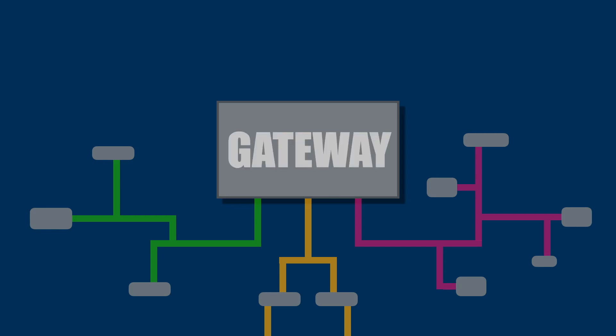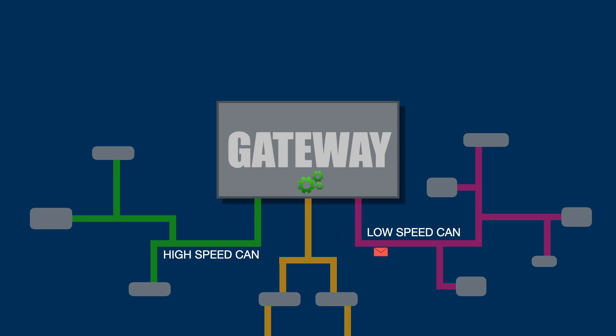And this is where the gateway comes in. The gateway acts as a kind of translator between the different speed CANs. So it takes the data from the high-speed network and converts it to a format that the low-speed network understands, and vice versa.